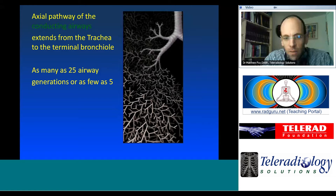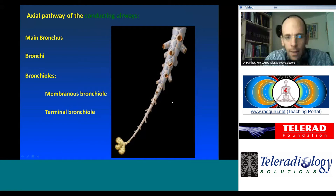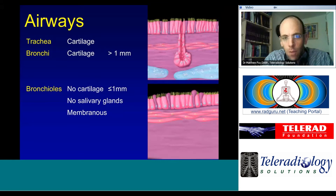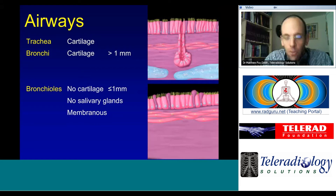Looking at a single pathway: we come down from the main bronchus through bronchi and bronchioles, which are divided into membranous bronchioles and terminal bronchioles. Further down we have the respiratory bronchioles, then alveolar ducts, alveolar sacs, and alveoli. The defining difference between central airways and peripheral bronchioles is the presence or absence of cartilage.